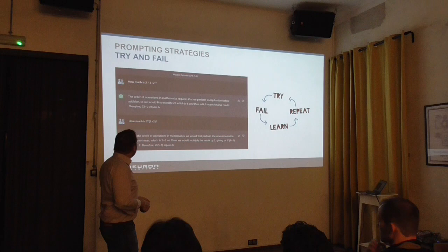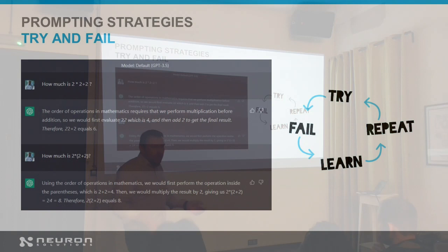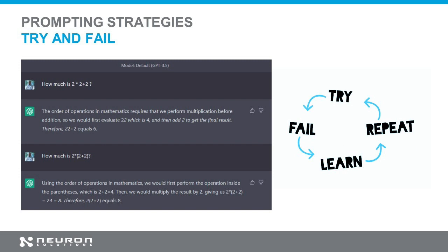First of all, try and fail — or trial and error, depends how you say that. The most natural way: I try to do something, if it does not work I try something else. Like here, I told the model that 2 times 2 plus 2, how much is that, and it gave me the right answer for that.